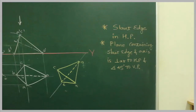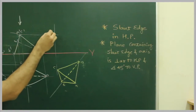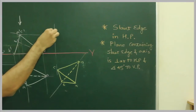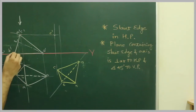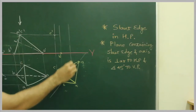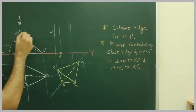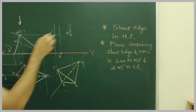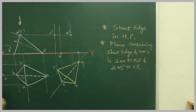Now we will project C from here, C dash from here — so we get C dash. Same way, we will project B from here and B dash from here, getting B dash. Then A from here, and S with O, O dash.